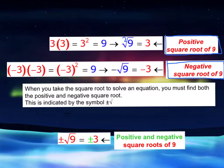So when you take the square root to solve an equation, you must find both the positive and negative square root. This is indicated by the symbol plus or minus and the square root symbol. You'll be using this symbol throughout this section.